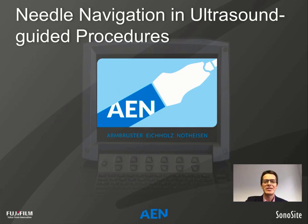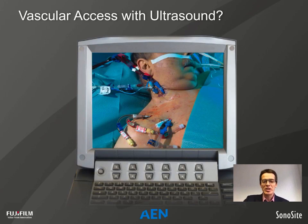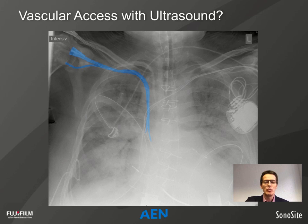Why do we recommend using ultrasound in invasive procedures? We all know the cases with landmark vascular access involving difficult situations with displacement of catheters as shown here. In this photo you see many catheters, and the one in the middle with the red text obviously has an unusual position on the lateral side of the clavicle. On chest X-ray you can see the ultrasound-guided placements of two catheters — the blue ones — and the displacement of the red one, which was placed in the subclavian artery in an emergency situation.